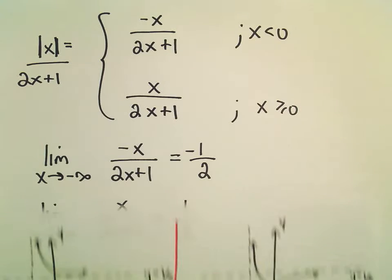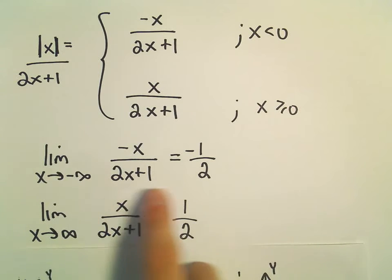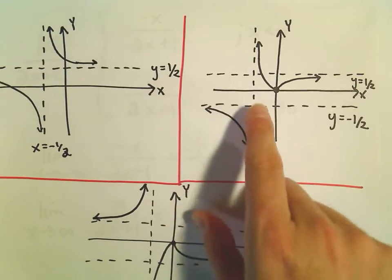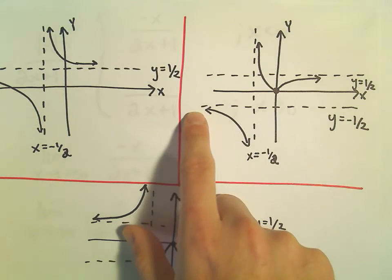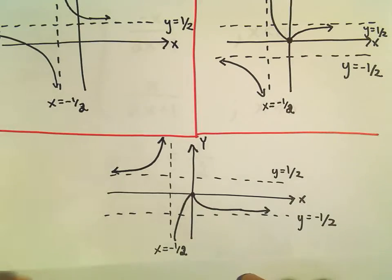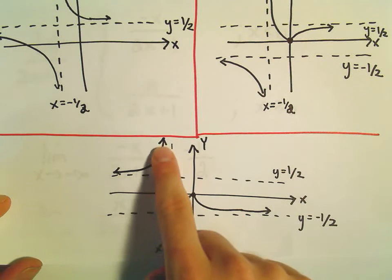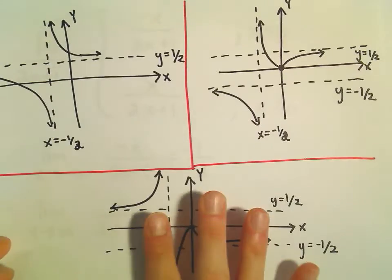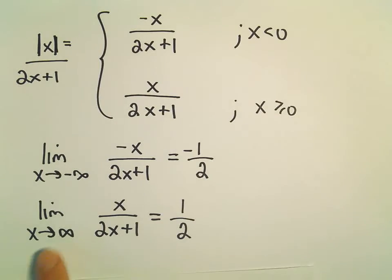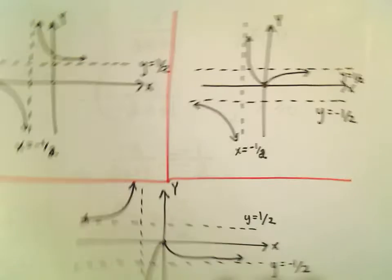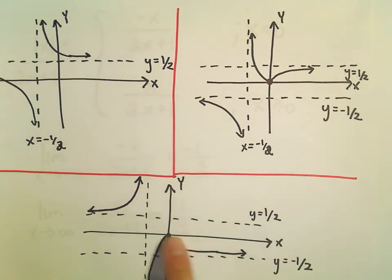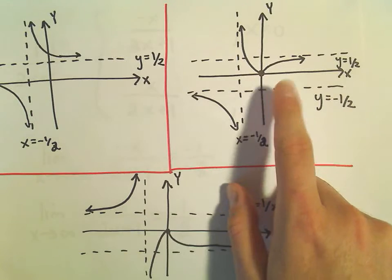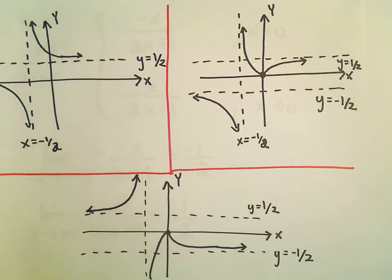Based on the limits, we can figure this out: as you go to negative infinity, the y values have to approach negative 1 half. This second graph does that. But on the third graph, as x goes to negative infinity, the y values approach positive 1 half — so the third one can't be correct. Similarly, as x goes to positive infinity it should be positive 1 half, which the second graph does correctly, while the third goes to the wrong asymptote. So the second graph is correct.